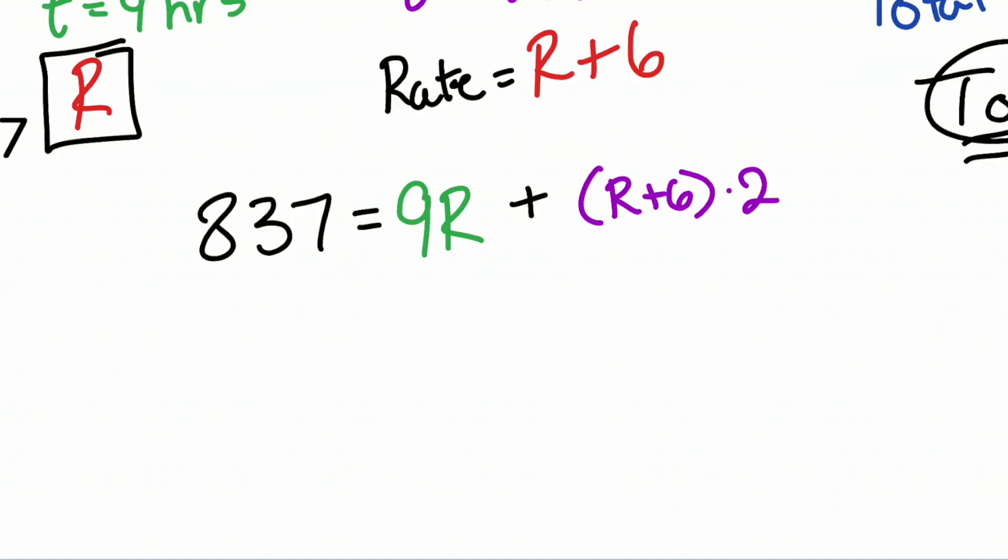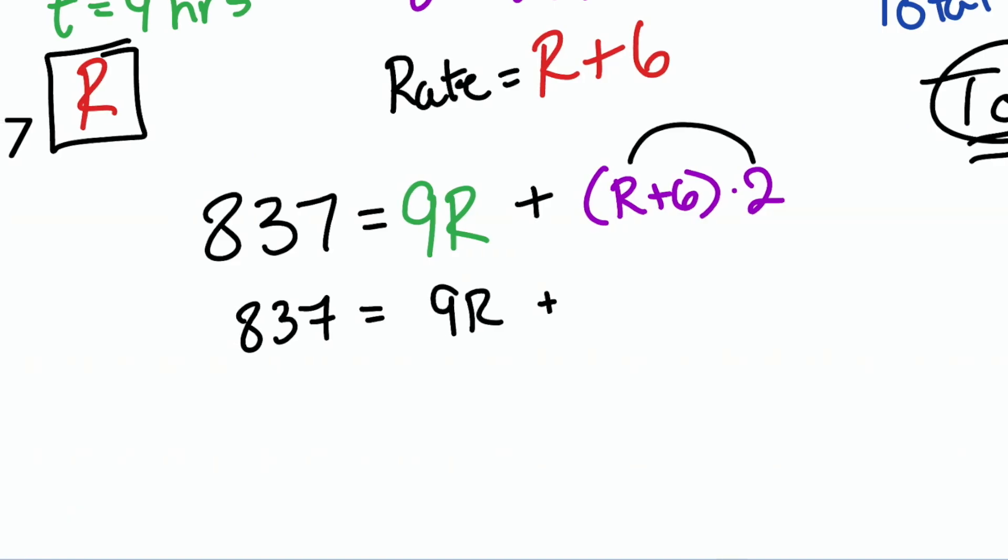Let's get back and solve this equation. We have 837 equals 9R - that's the easy part. Now we just have to distribute that 2 to the R and 2 to the 6. So 2 times R is 2R, 2 times 6 is 12. From here we'll combine our like terms, 9R and 2R, so we'll have 837 equals 11R plus 12.